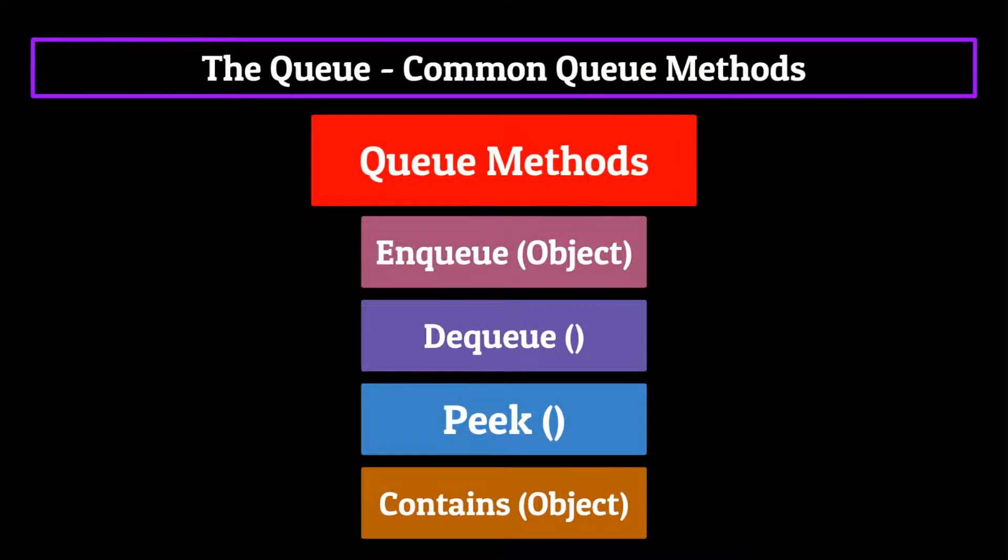And there they are all together now. Enqueue, dequeue, peak, and contains. Four methods which will help you use a queue to its maximum efficiency. Speaking of efficiency, let's now talk about the time complexity equations for a queue.